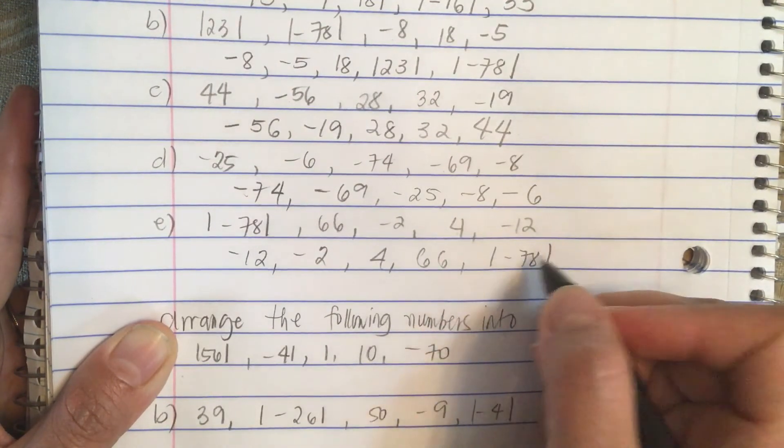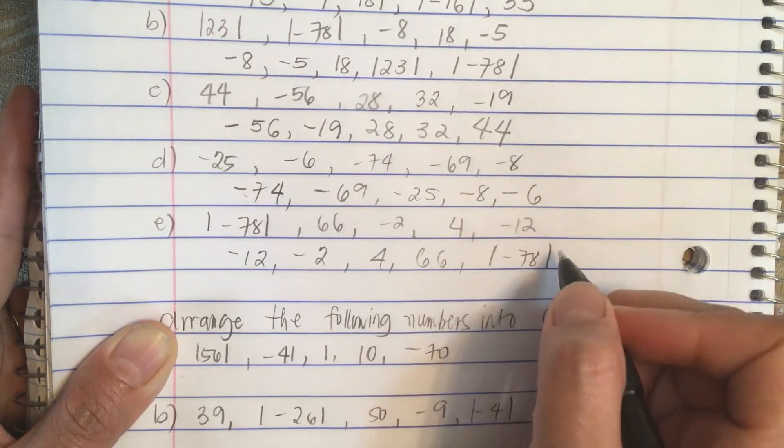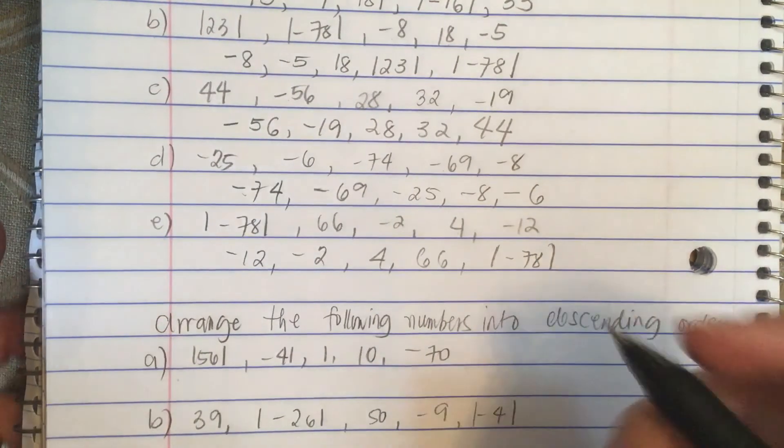Now it is a minus 78, but when it has these two vertical lines, it means ignore the sign.